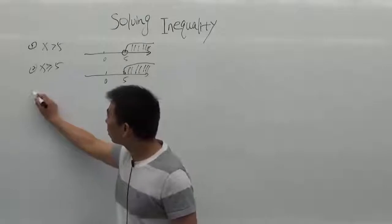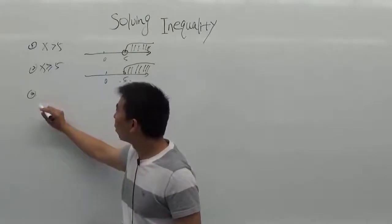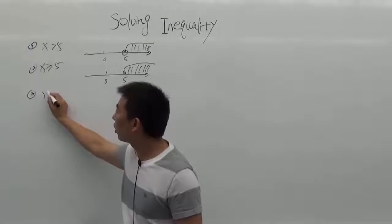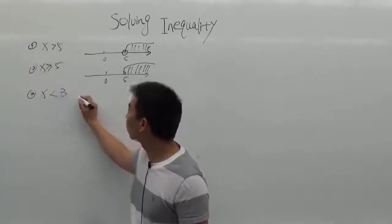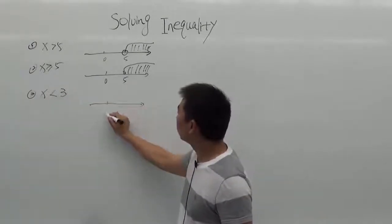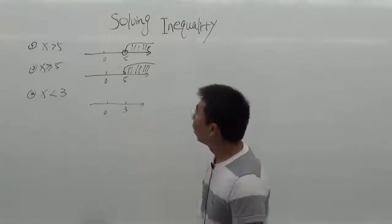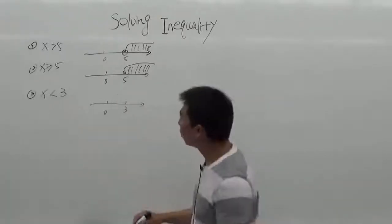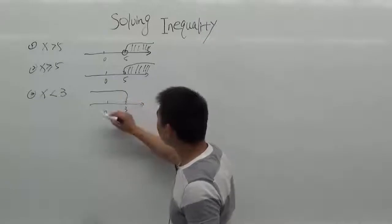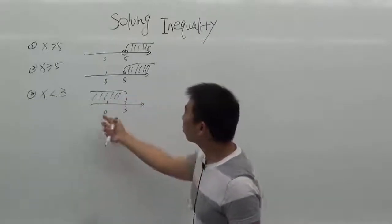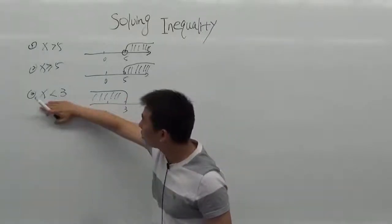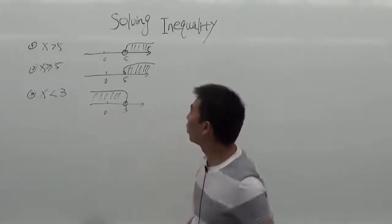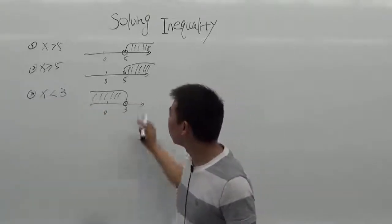The third one is one expression less than the other one. We can think about x less than 3. On the number line: number 0, number 3. So x less than 3 means all the numbers to the left of 3, but because it is strictly less than 3, it does not include number 3 — it's an open circle.